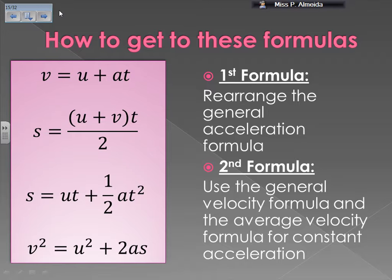If you want to derive the first formula, you really just need to rearrange the general acceleration formula. Remember that acceleration equals final minus initial velocity divided by time — so this is purely rearranging a formula. For the second formula, you use the general velocity formula and the average velocity formula for constant acceleration. Velocity equals distance over time, so distance is velocity times time. If velocity is not constant, you need the mean velocity: add initial and final, and divide by two.